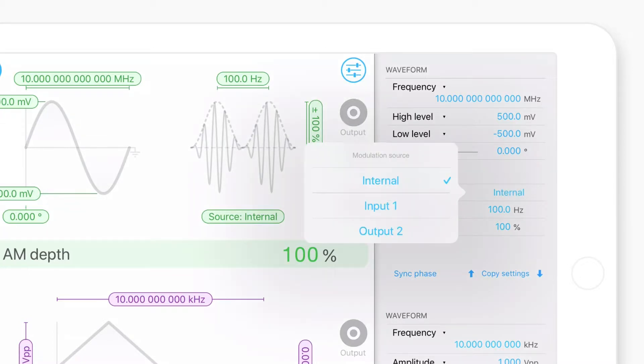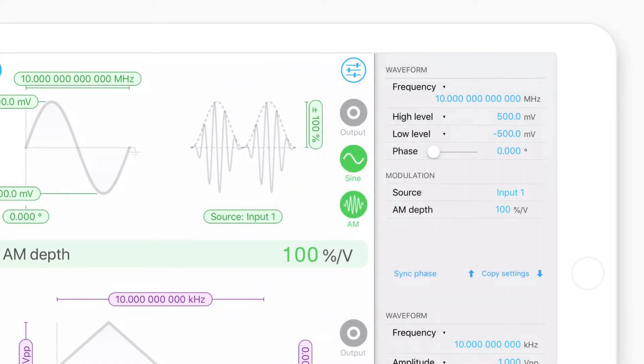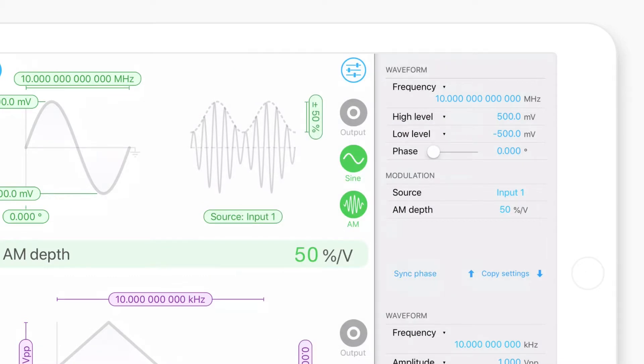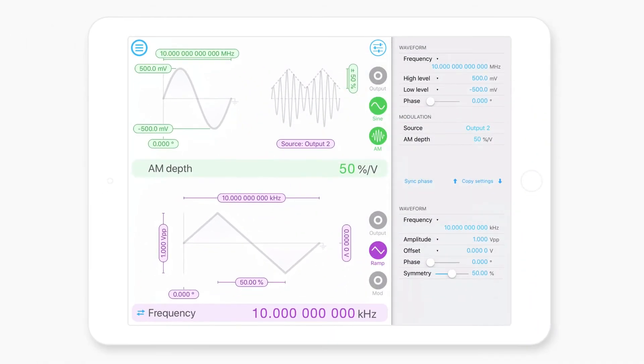But if I want to be a little bit more exotic, I can actually modulate the amplitude using the signal coming in on input one. And what this allows me to do is tune the amplitude modulation depth based on the voltage coming in. So the amplitude of the signal and input one, but I can also modulate the amplitude using the output from channel two. So you'll notice here that channel two is producing a sawtooth wave with a symmetry of 50 and the amplitude of the sine wave on channel one is now also being modulated by that signal.